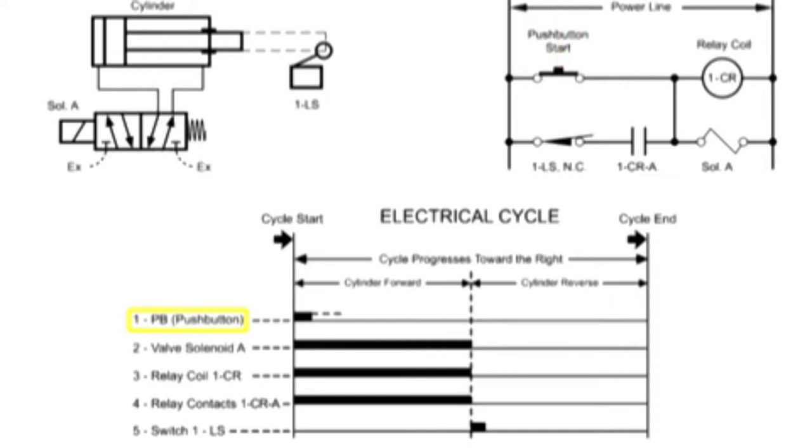Line 1 on the sequence diagram indicates that the push button may be held down for a variable length of time, as indicated by both solid and dotted lines.